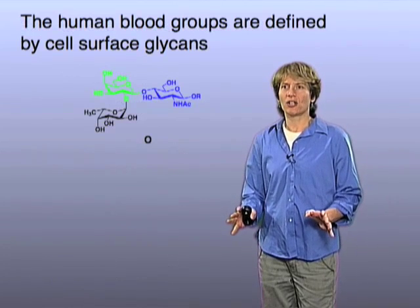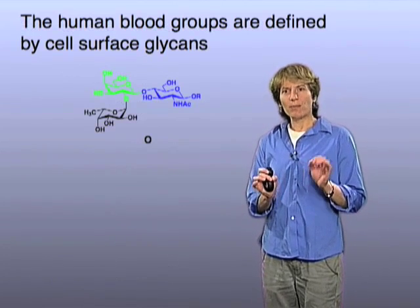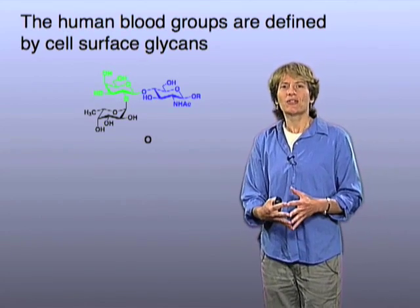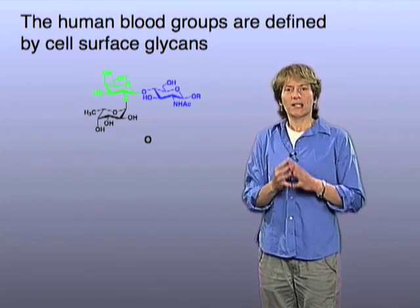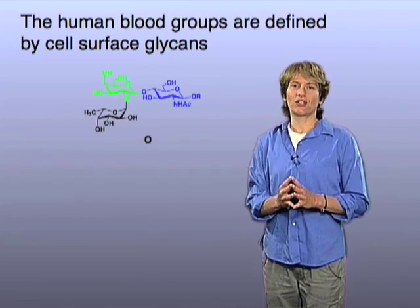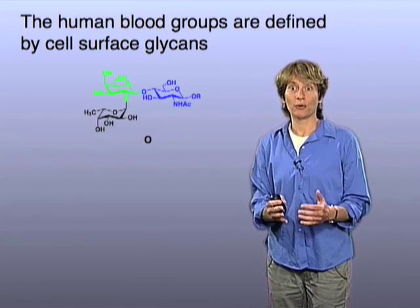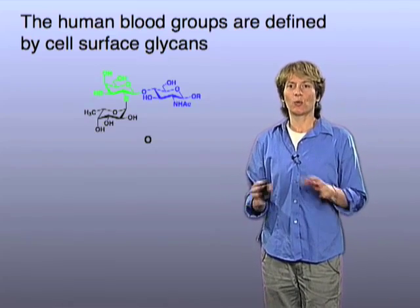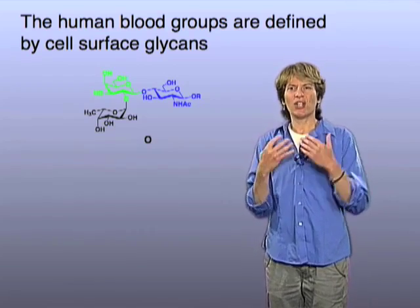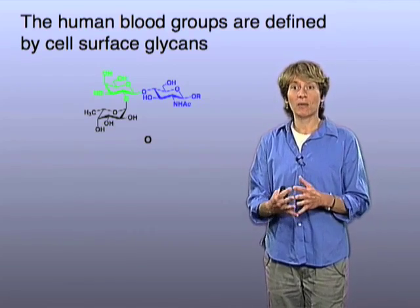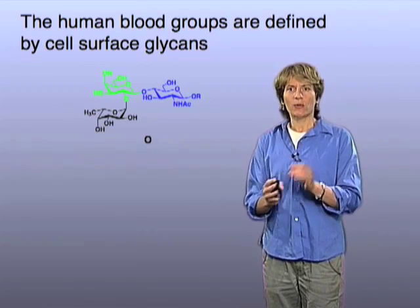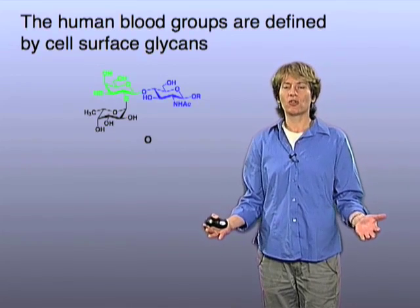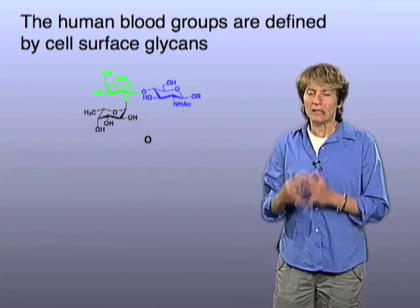In the history of glycobiology, probably one of the most important discoveries that really started to attract a lot of interest from outside the field was the discovery in the middle of the last century of the human blood groups. This is a discovery that has had huge implications with respect to understanding immunology, the human immune system, and also it was central for the development of blood transfusions — one of the most important clinical procedures.